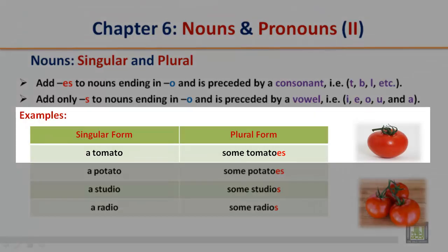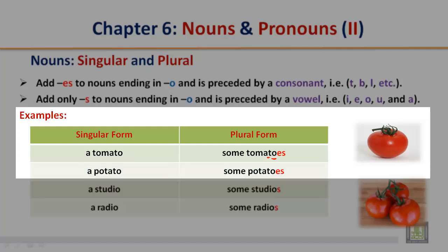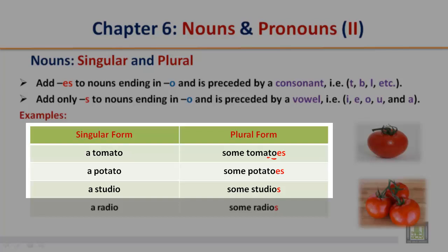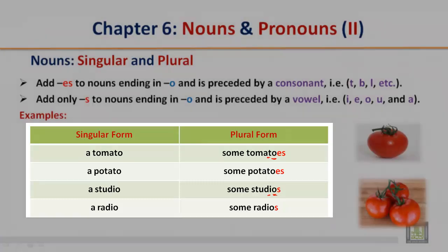Singular form: a tomato. Plural form: some tomatoes. You added ES because it ended in O, and before the O is a consonant T. Same thing for a potato — becomes some potatoes with ES. But with a studio, you only add an S because it ends in O preceded by a vowel I. Singular form: a radio. Plural form: some radios.